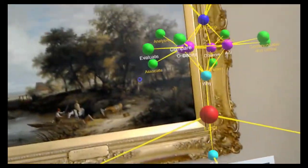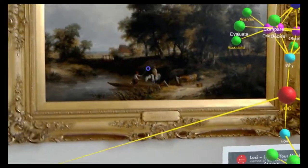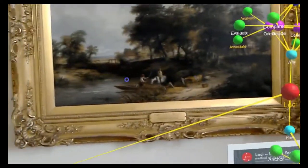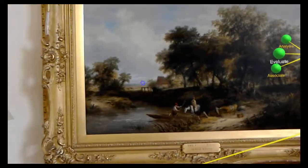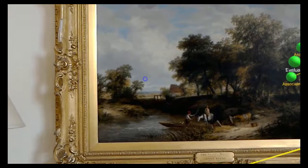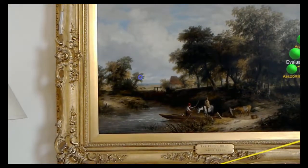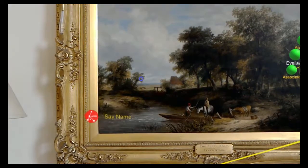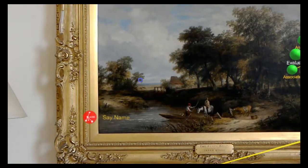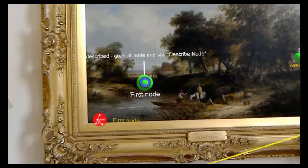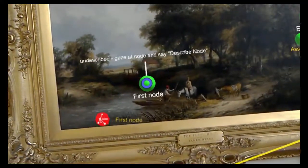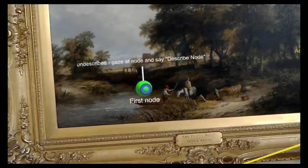So some of the things you can do is you can just create your own node in the first place, out in mid-air, about a meter in front of you, by saying Add Node. First Node. And then you place it. Select. Placed.